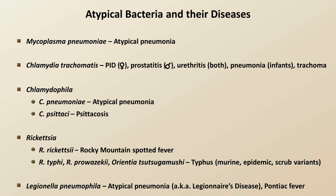There are actually 17 other species of Legionella besides pneumophila that have been associated with human disease, though most of them are quite rare. Although uncommonly discussed, taken together Mycoplasma, Chlamydophila, and Legionella may account for up to 20% of all community-acquired pneumonia in the United States.